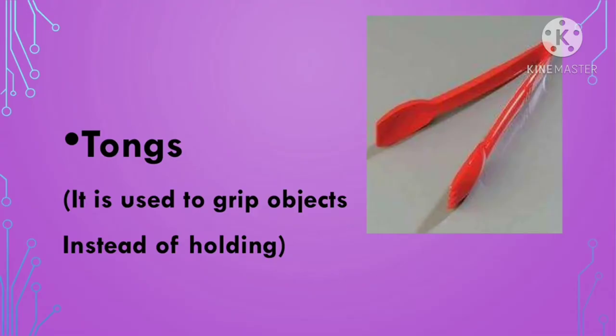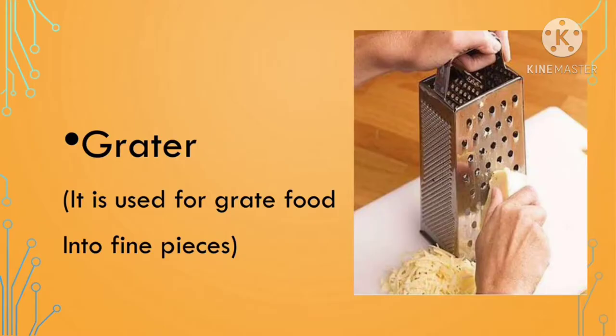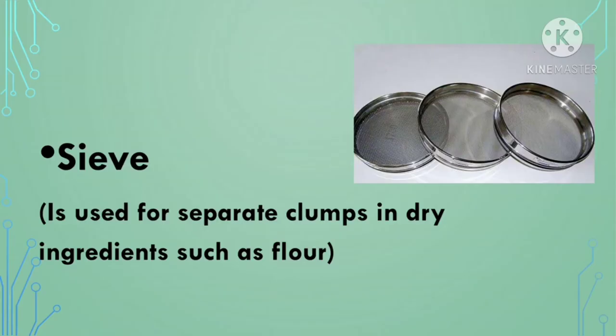Tongs are used to grip objects instead of holding them by hand. Whisk is used for mixing, such as whipping eggs or batter. Grater is used for grating food into fine pieces. Sieve is used to separate clumps and dry ingredients.